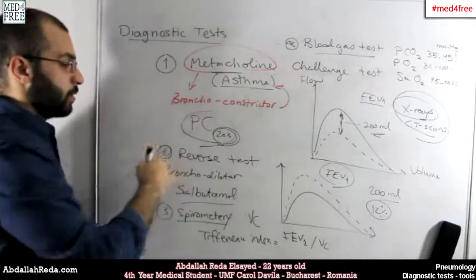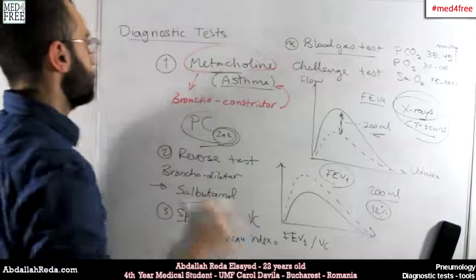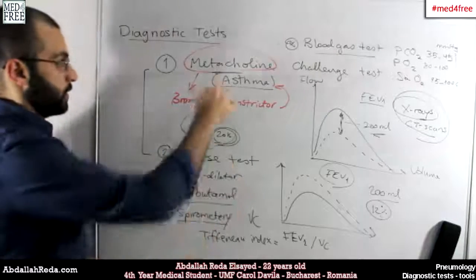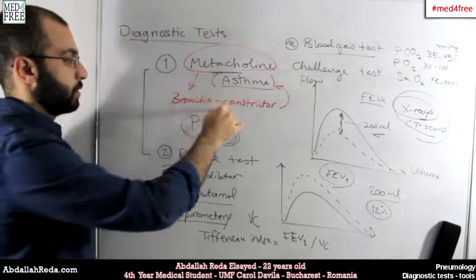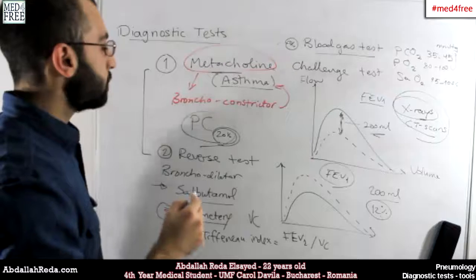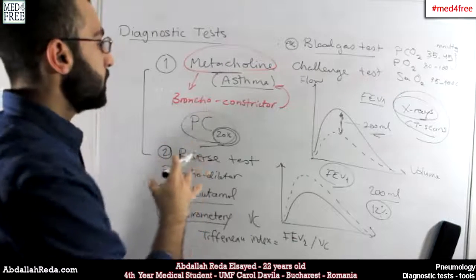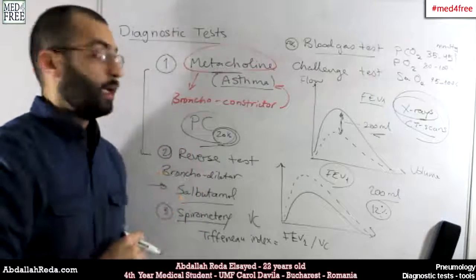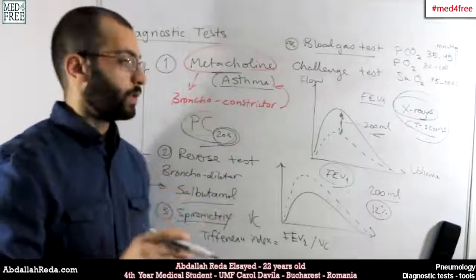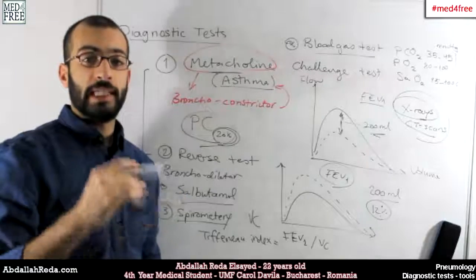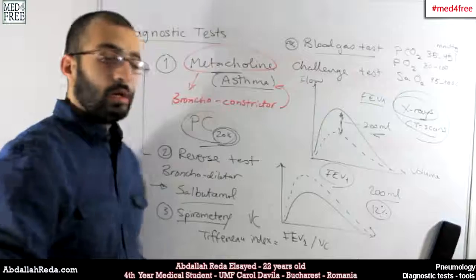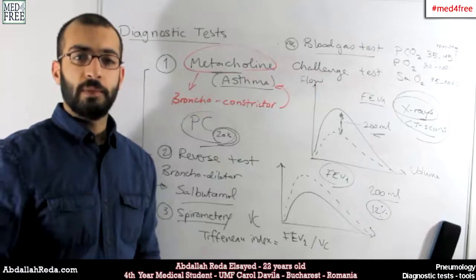Both the methacholine challenge test and the reversal test are called pharmacological tests, because both use a pharmacological substance — methacholine, which is a bronchoconstrictor, and salbutamol, which is a bronchodilator. That sums it up for the diagnostic tests. Next time we're going to talk about the alveolar structure and the mechanism of blood gas exchange throughout the alveolar membrane. Thank you for watching and see you next time.